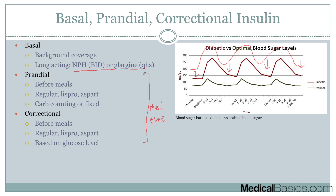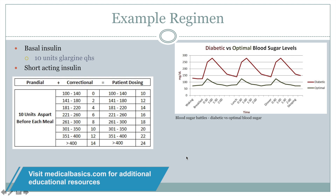Mealtime insulin is given right before meals and is broken into prandial and correctional. Prandial is a fixed dose — for example, always 10 units of aspart before each meal regardless of blood sugar. Correctional is based on the current glucose level: for example, if sugar is 100–140, add zero units; 141–180, add two units; 181–220, add four units, and so on.